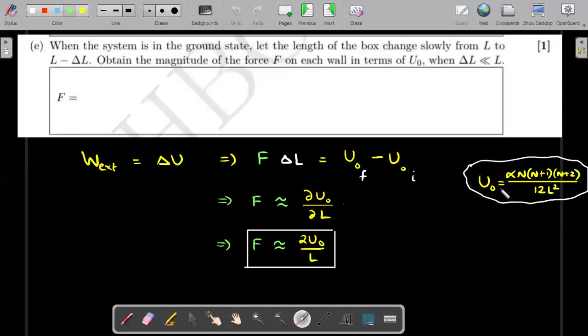Work done by external agent in compressing those walls is force applied into delta L. That should be equal to the change in the energy states from L to L minus delta L. But if you are smart enough, once this value is tending to very small value, this is nothing but the first principles of differentiation. You bring delta L down. So instead, you directly write F approximately, because this delta L is very small, can be written as dU/dL. So what is the differentiation of this with respect to L? All the upper terms will stay intact. It's only the L square's differentiation in the denominator. So you get 2U_0/L, which is a simple expression.